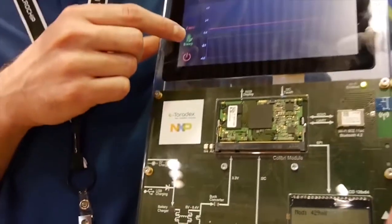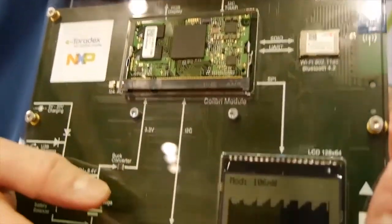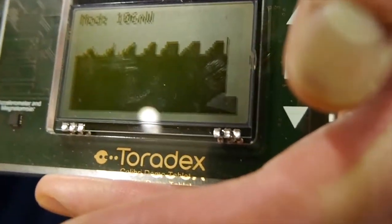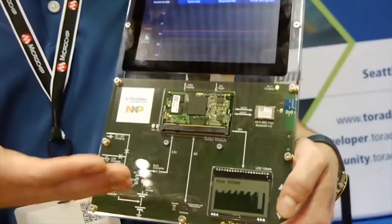So we can actually put the A7 core to sleep, and now the system is only running the M4 core. We see a drop in the power consumption, and then this A7 core comes back online and we see the power consumption rise again.